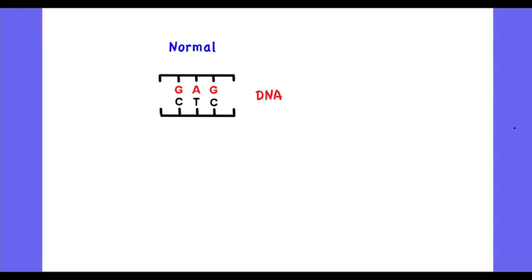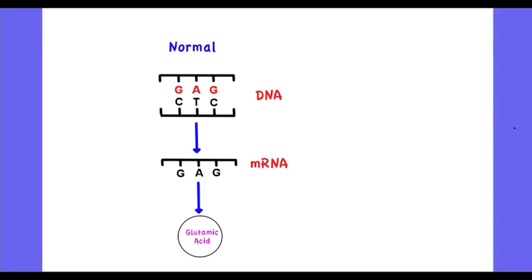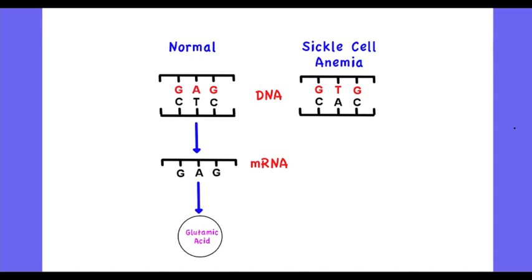Under normal conditions, there is a triplet on DNA — GAG — and when that goes through transcription to the mRNA and then finally through translation, it produces the amino acid glutamic acid. However, the base substitution mutation changes the A in GAG.